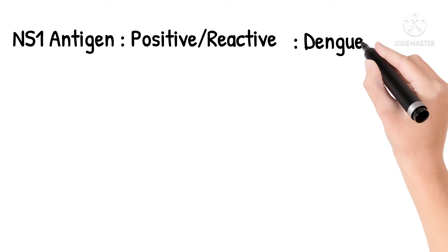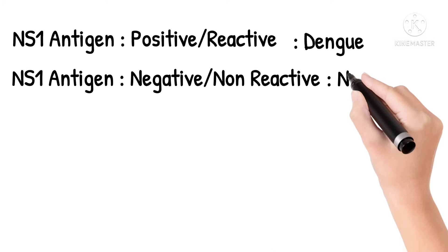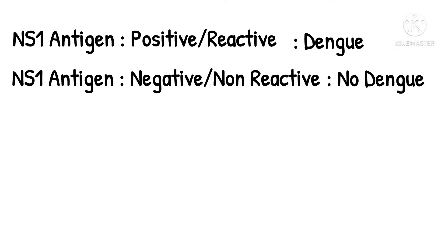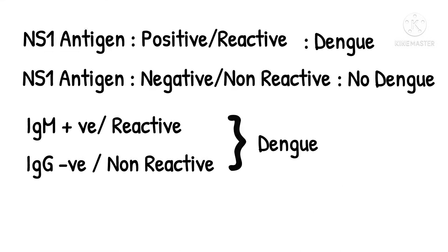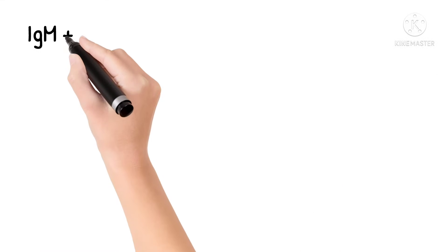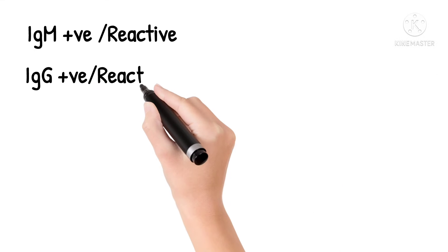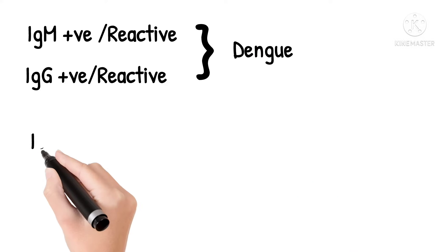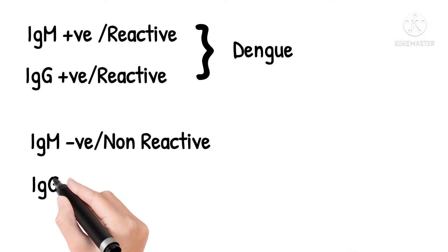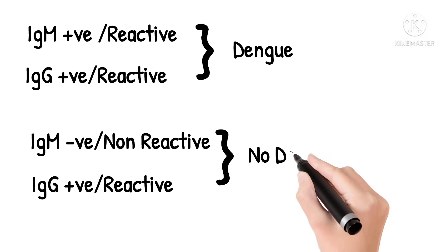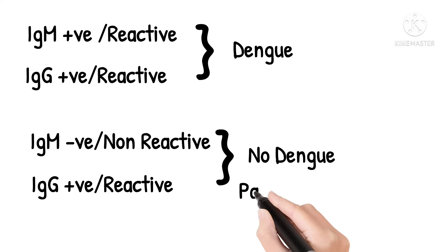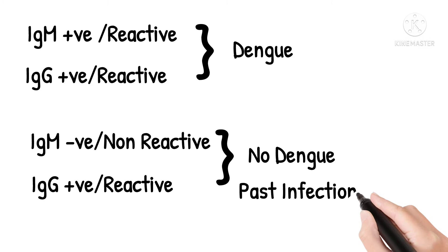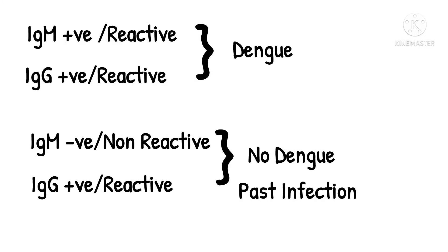If NS1 antigen is negative or non-reactive, the person is not infected with dengue. If IgM is positive and IgG is negative, that indicates dengue. If both IgM and IgG are positive, the person is also infected with dengue. If IgM is negative and IgG is positive, there is no active dengue infection, but the person has had a past dengue infection.